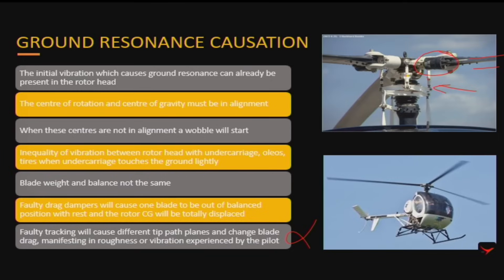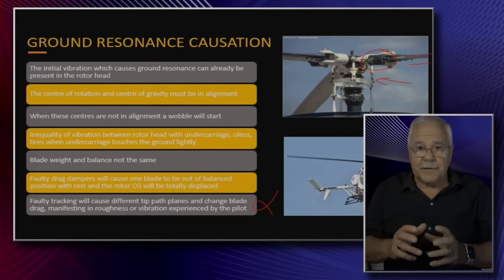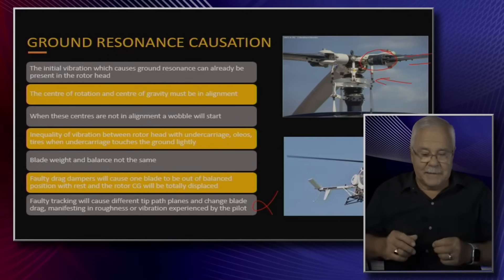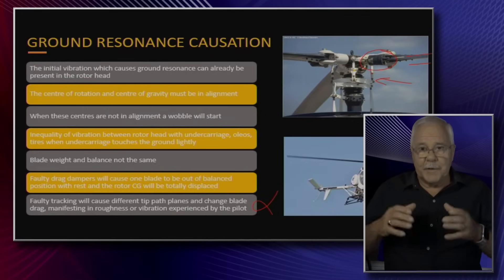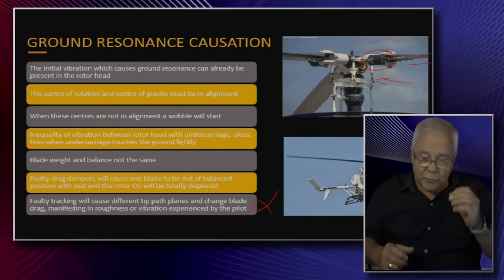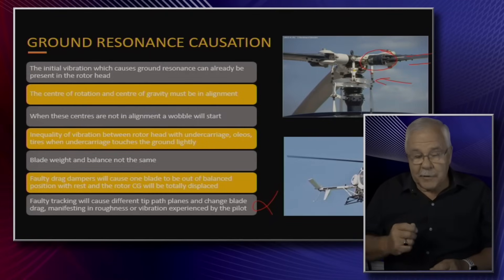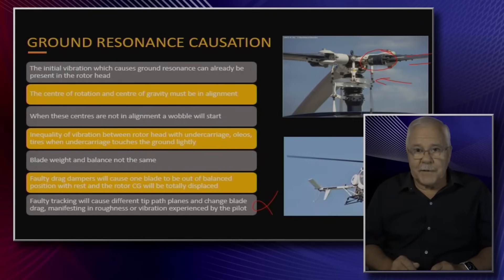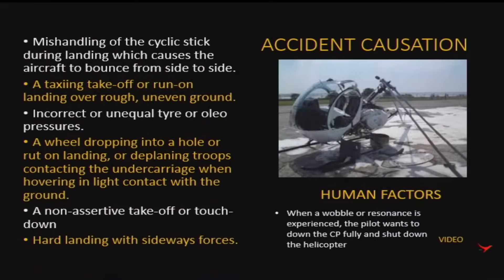Faulty tracking and different tip path planes go a little bit deep: if blade tracking is not correct, the blades run at different heights with different angles of attack, causing different drag and vibration. Vibrations from the main rotor head are typically low frequency, whereas something from the tail rotor is a high frequency vibration normally felt on the rudders. Engine or turbine vibration is also a high frequency vibration.